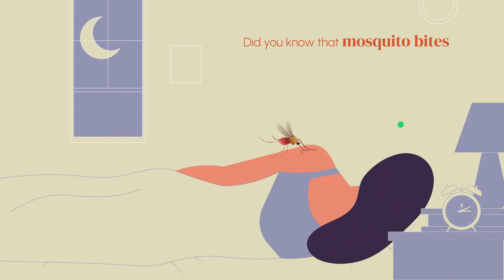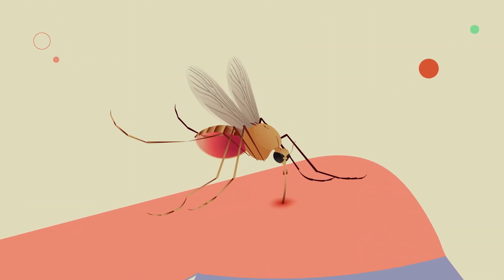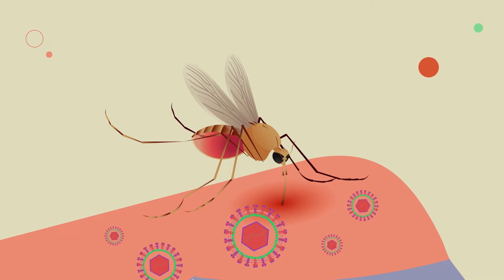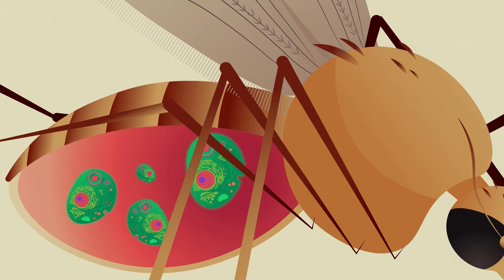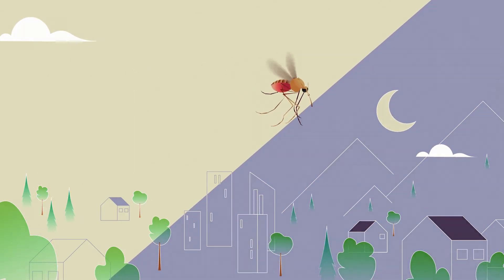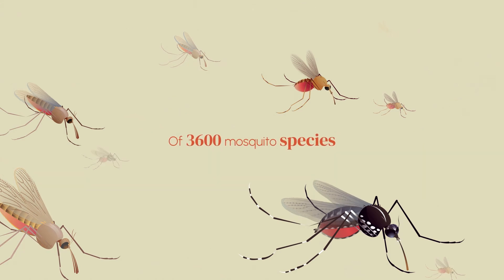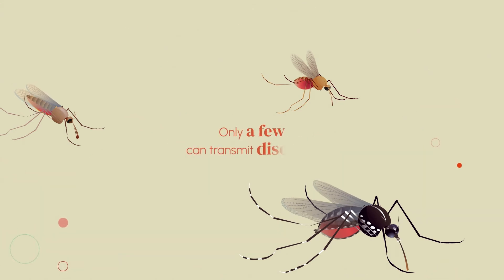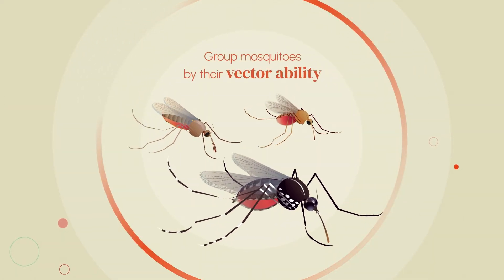Did you know that mosquito bites can only cause diseases when they come from an infected mosquito? When a female mosquito feeds on an infected human or animal, it takes up a pathogen that replicates inside the body of the mosquito, which becomes infective after several days. However, only a few of the 3,600 mosquito species worldwide have the ability to transmit diseases. That's why it is crucial to group mosquitoes based on their potential transmission ability.